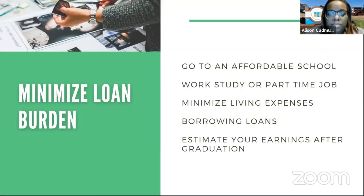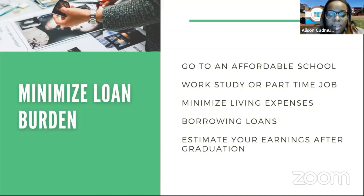You can also minimize your living expenses by living with a roommate or staying at home with your parents, cooking more of your meals instead of eating out. It's also important to borrow loans responsibly — borrow only what you need, because you will have to pay back the loan with interest.